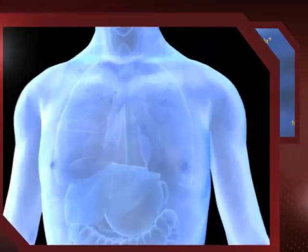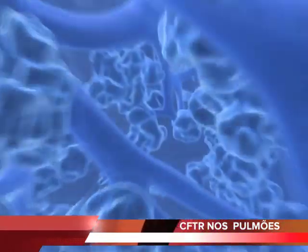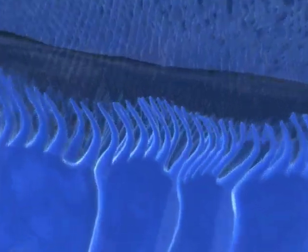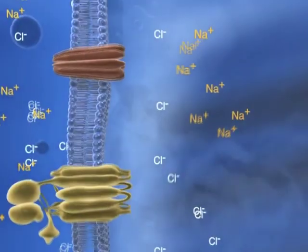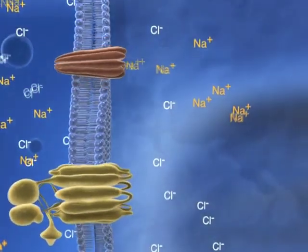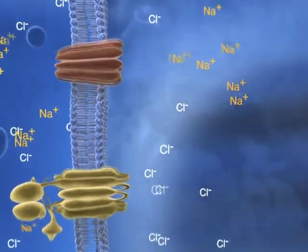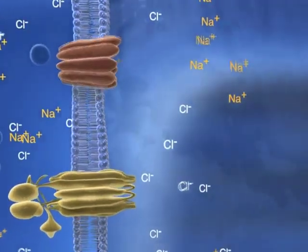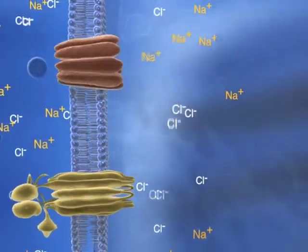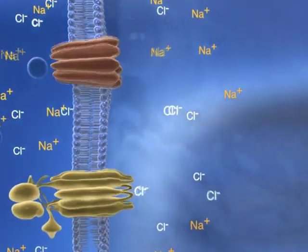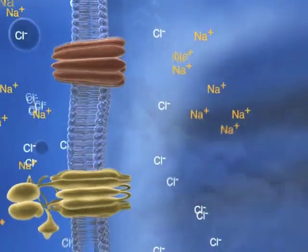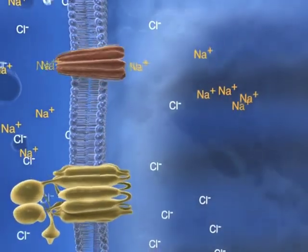In the normal lung, the airway surface liquid, or ASL, supports an environment in which cilia can beat freely and clear mucus that has trapped inhaled particles. Active secretion of chloride via the CFTR channel and absorption of sodium are necessary to regulate the volume of the ASL.